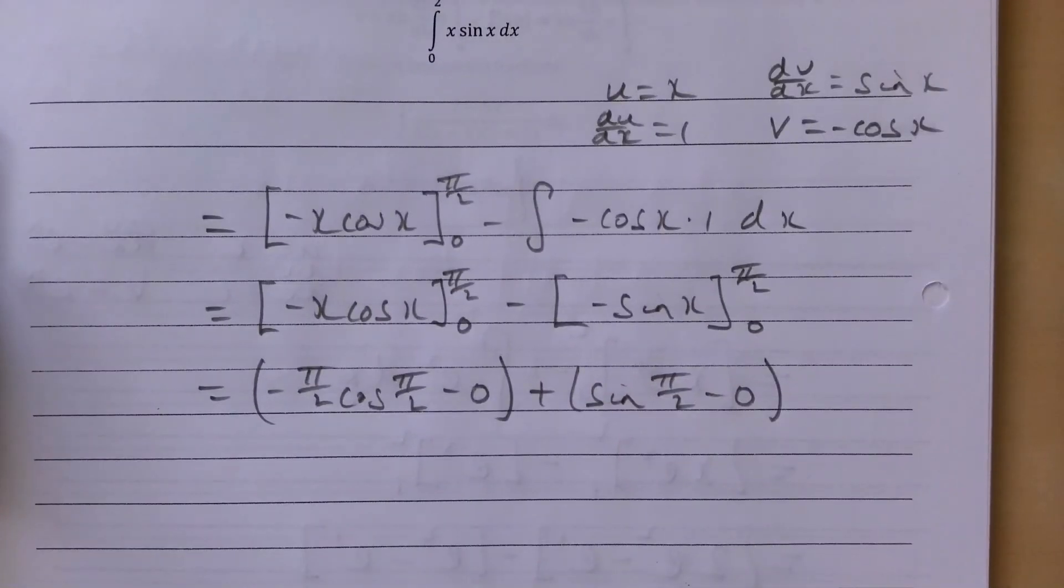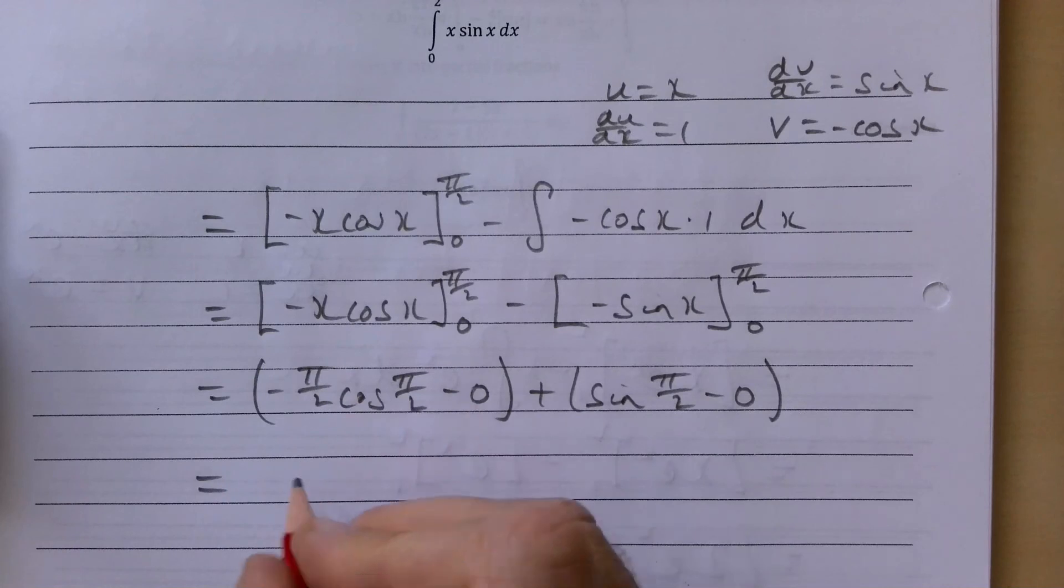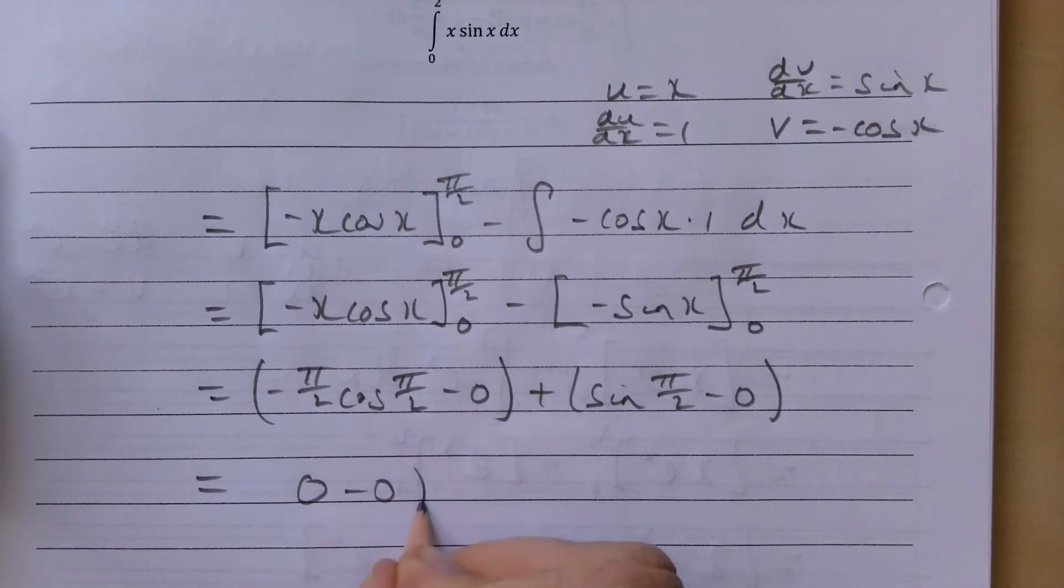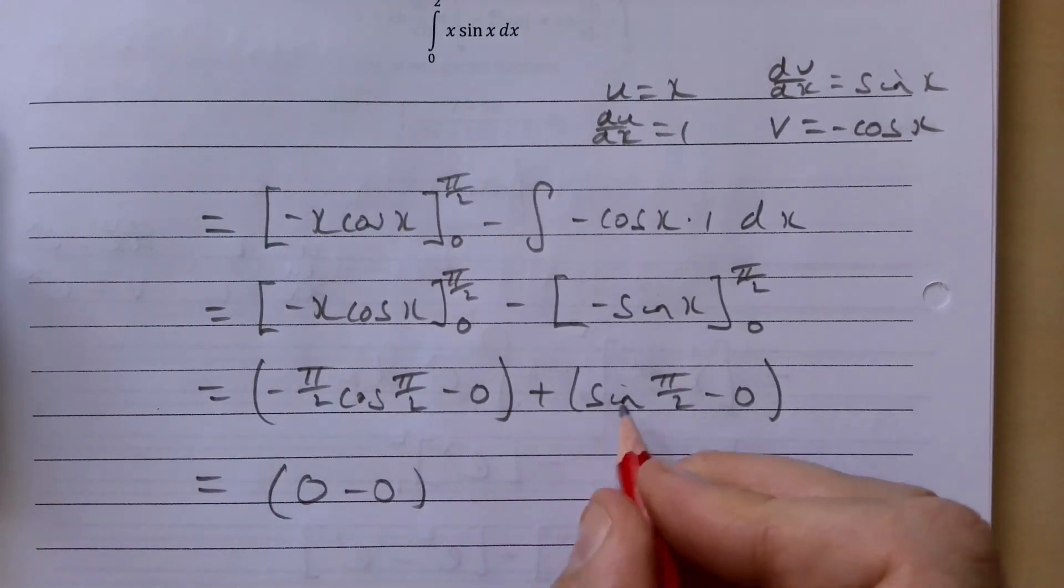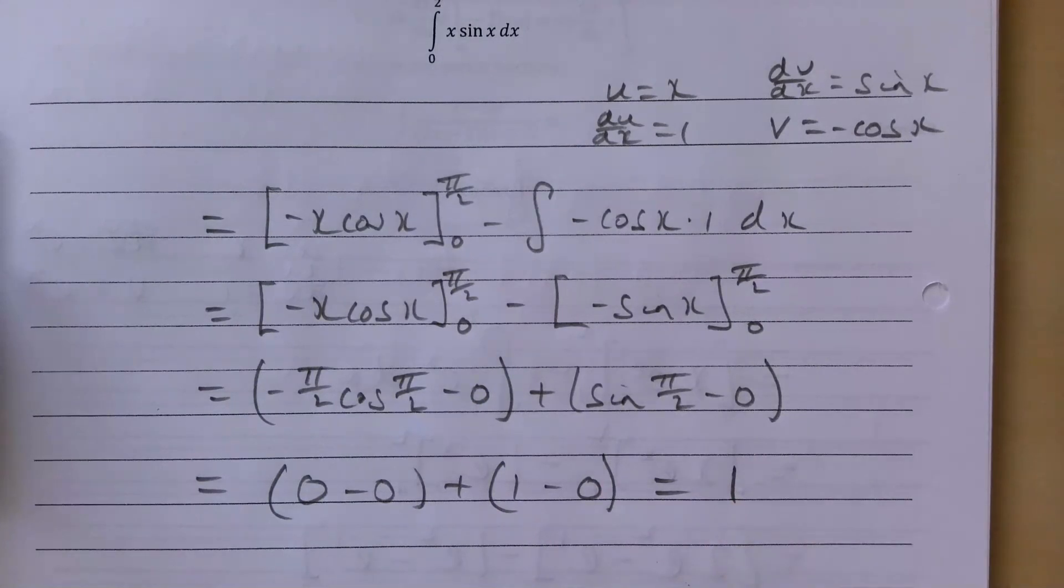Remember of course that pi over 2 is effectively 90 degrees, so we can do our sums from there. The cos of 90 is 0, so this whole bracket here becomes 0, and sine of 90 degrees is 1, so after all that we get an answer of 1.